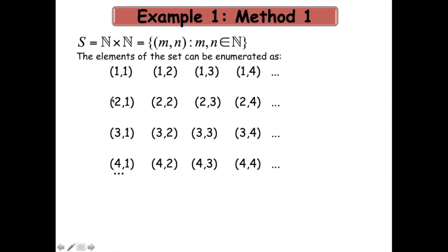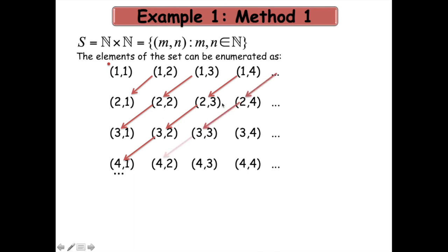What is the diagonal procedure? The first diagonal contains the single element (1,1). The second diagonal contains elements (1,2) and (2,1). Along the next diagonal I take elements (1,3), (2,2), (3,1). Then I move up to the next diagonal, and in this manner we can see that each diagonal has finitely many elements.